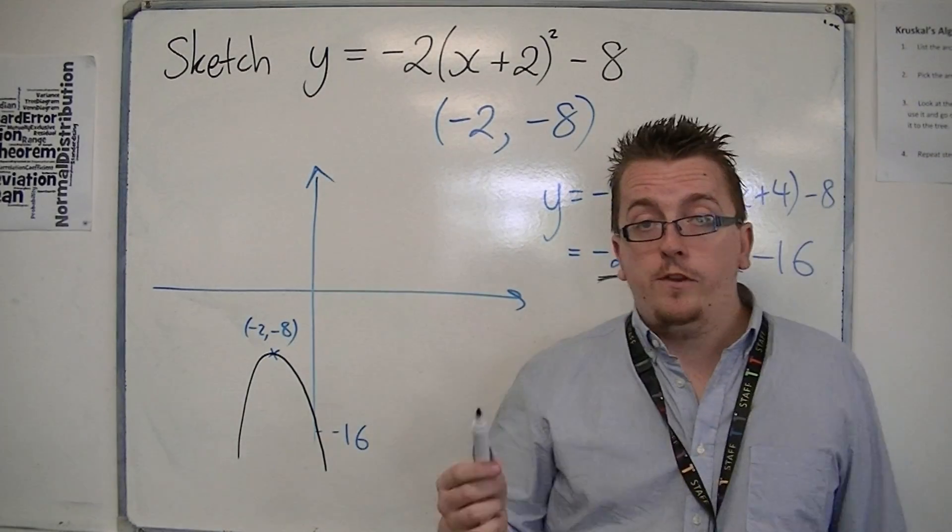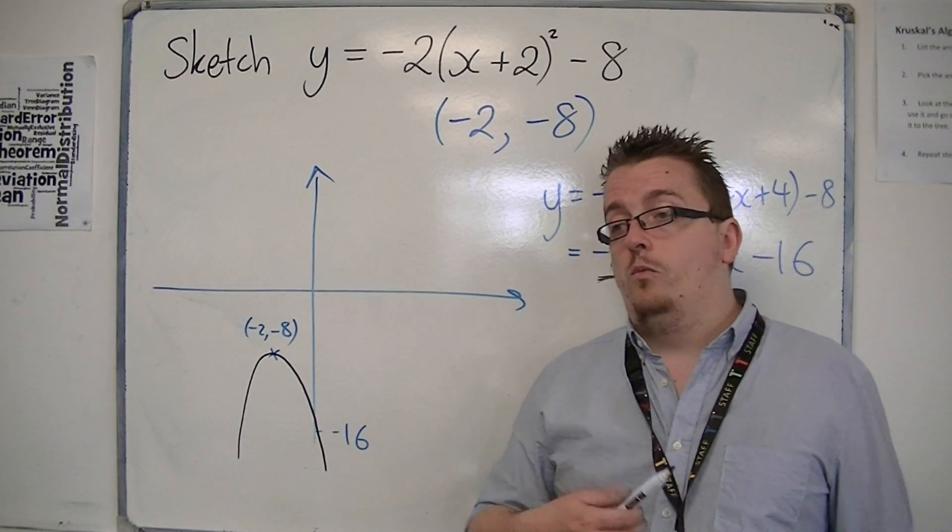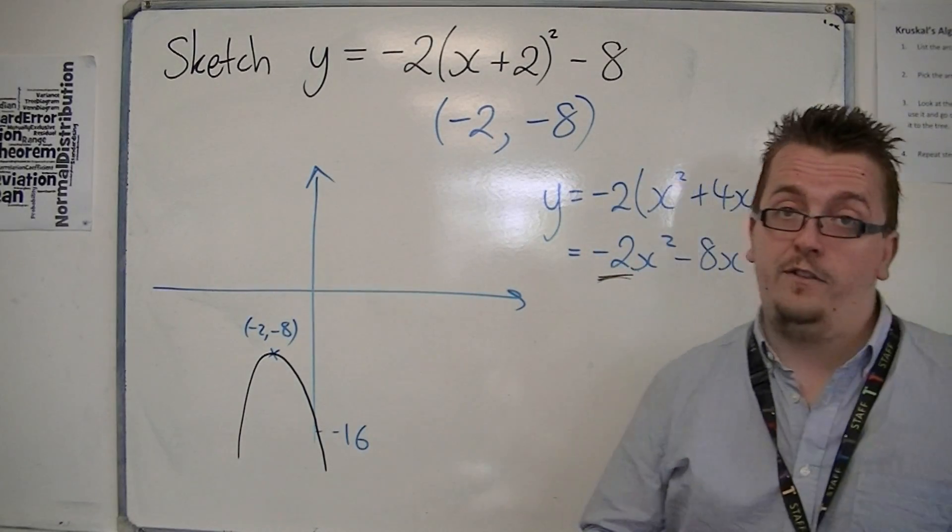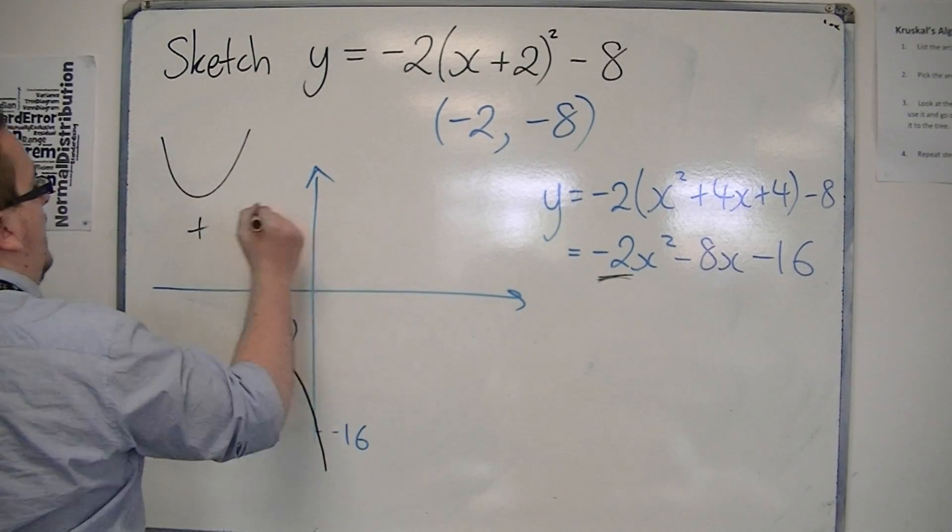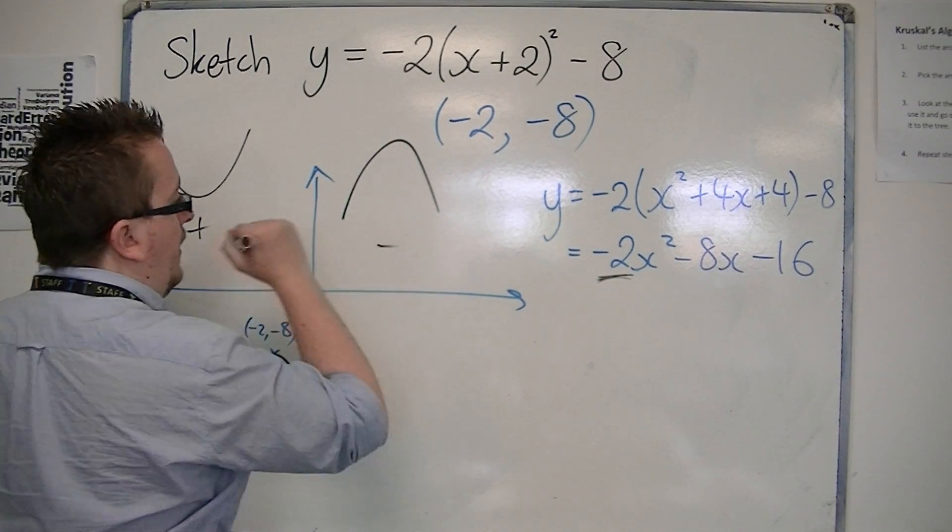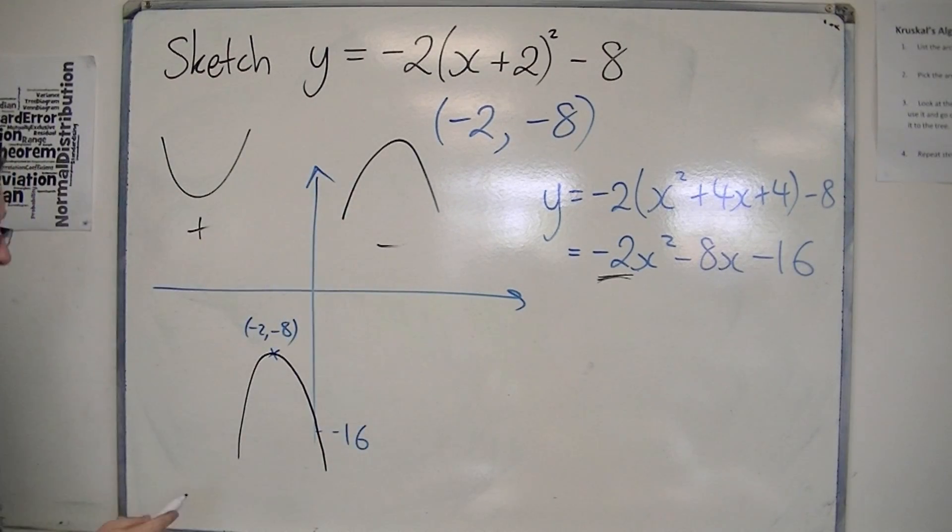So in actual fact, if you have a negative number in front of the x squared, then you get what some people think of as a sad face. Happy face if you've got a positive number, but a sad face if you've got a negative number. So it is reversed.